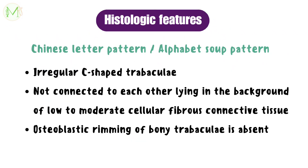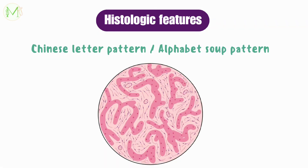The histological feature of this anomaly is the Chinese letter pattern or alphabet soup pattern. The lesion shows numerous irregular C-shaped trabeculae of woven bone not connected to each other, lying in the background of low to moderate cellular fibrous connective tissue. Also, osteoblastic rimming of bony trabeculae is absent.